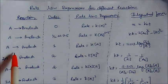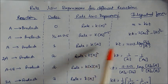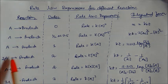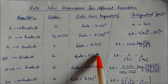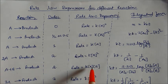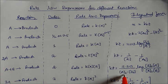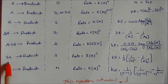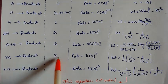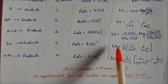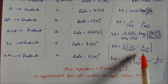For third order (3A → product): rate equals k[A]³, integrated form kt equals ½(1/a² minus 1/a₀²). For nth order: rate equals k[A]^n, integrated form gives the nth order equation applicable for all orders except n equals 1 (first order). When n equals 1, the denominator becomes zero, so the first order equation must be used separately. The nth order integrated rate equation is the most general form covering zero, second, third, and higher orders.